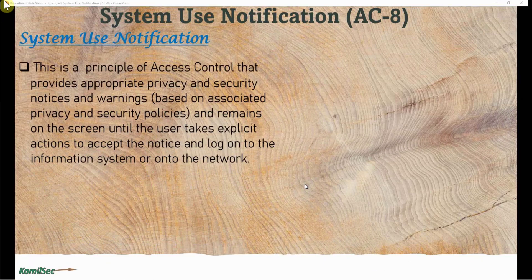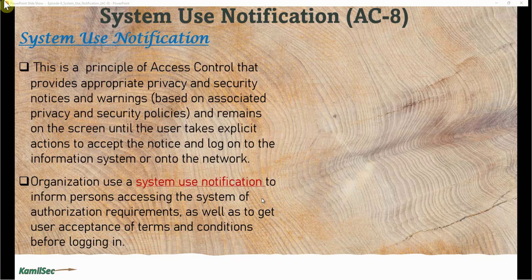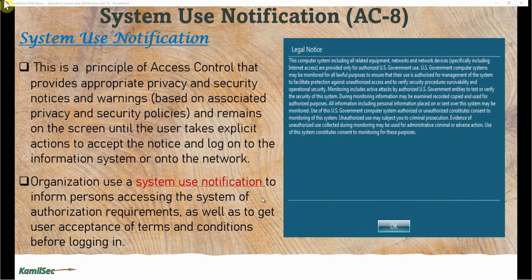System Use Notification is the principle of access control that provides appropriate privacy and security notices and warnings based on associated privacy and security policies. It remains on the screen until the user takes explicit action to accept the notice and log on to the information system or network. Organizations use a system use notification to inform persons accessing the system of authorization requirements and to get users' acceptance of terms and conditions before logging in. This is an example — you can see it has all the required language, and the user has to explicitly accept it by clicking OK. That is more binding before they can continue and log into the system.